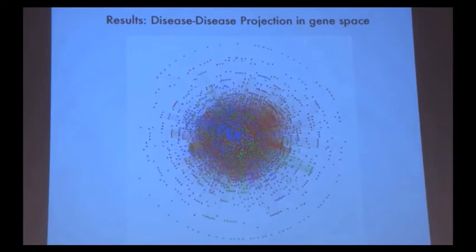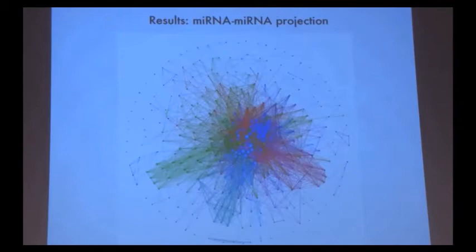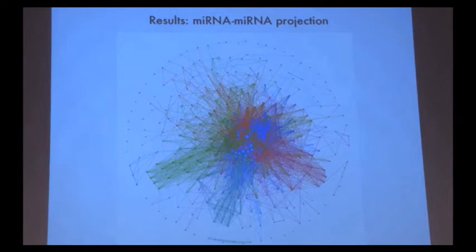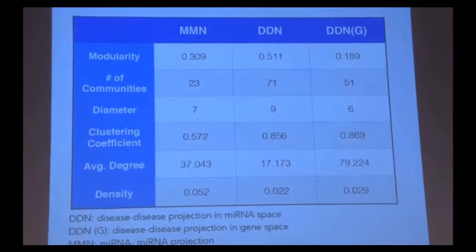In stark contrast, in gene space, the disease projection has far less clustering and is far more homogenous. The micro-RNA-to-micro-RNA projection also has far less distinctive clustering than the disease projection, which shows that many micro-RNAs target a wide range of diseases, causing micro-RNAs to have overlap in the diseases that they target.